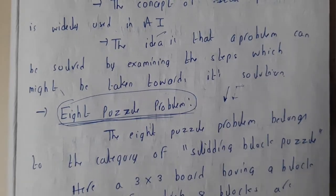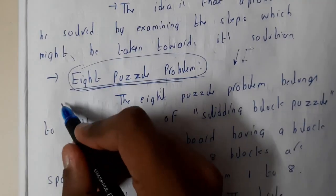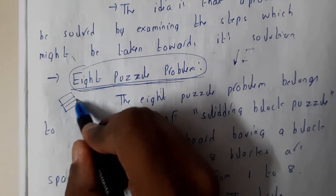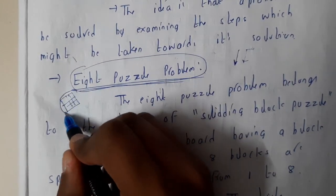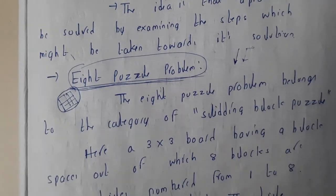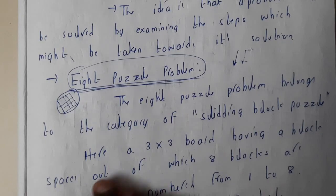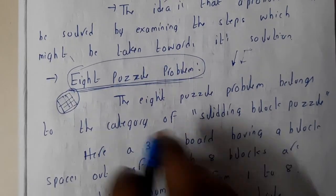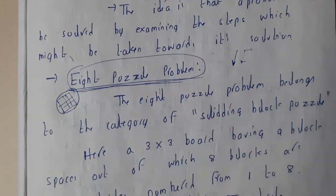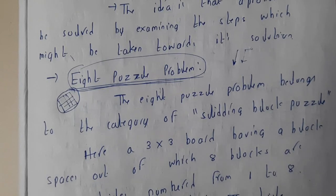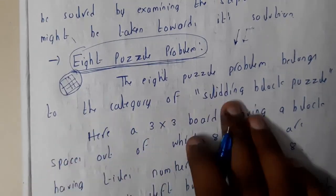These are written in a 3x3 grid or 3x3 matrix board. These eight numbers are arranged in a random way. Your goal is to arrange them in ascending order by moving blocks. There will be only one empty block, and by moving that, you need to reach your goal node. The eight puzzle problem belongs to the category of sliding block puzzles.